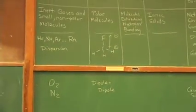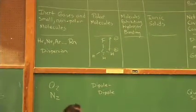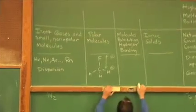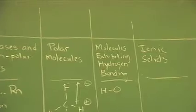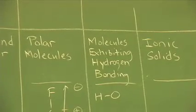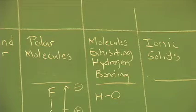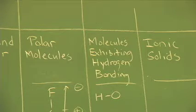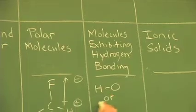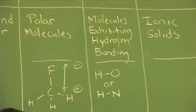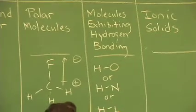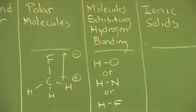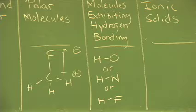Molecules that exhibit hydrogen bonding are next. The criteria here is, as the name implies, we need hydrogen to be present. Hydrogen needs to be bonded directly to an electronegative element such as oxygen, or hydrogen can be bonded directly to a nitrogen, or hydrogen bonded directly to the extremely electronegative fluorine.